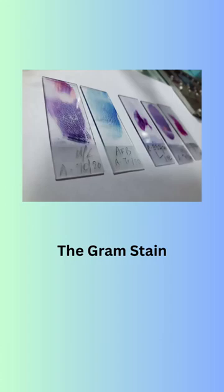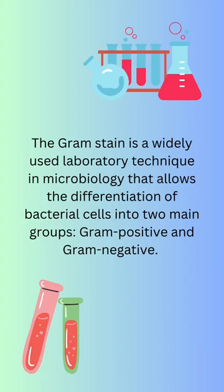The gram stain is a widely used laboratory technique in microbiology that allows the differentiation of bacterial cells into two main groups, gram positive and gram negative.